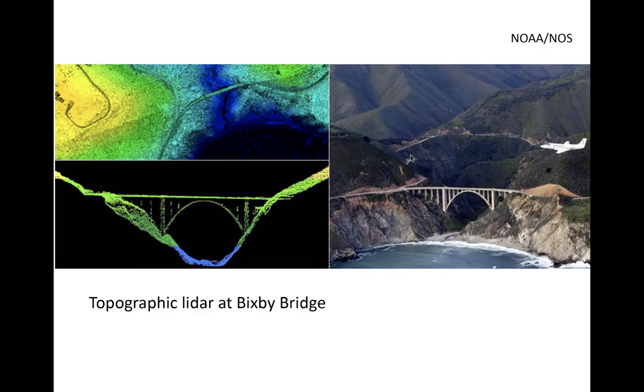LIDAR can also be used to map topography and coastal bathymetry, like this example derived from aerial LIDAR near the Bixby Bridge along the Big Sur coastline using the same principles as discussed before. Topographic LIDAR generally uses near-infrared radiation at 1064 nanometers, while bathymetric LIDAR uses green light at 532 nanometers that can partially penetrate water.